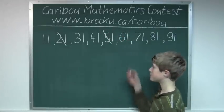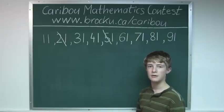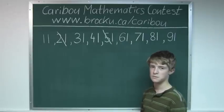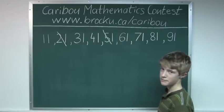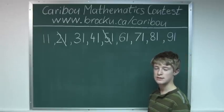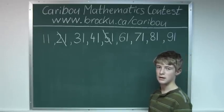Now sixty-one: six plus one is seven, but seven is not divisible by three. Now seventy-one: seven plus one is eight, but eight is not divisible by three.